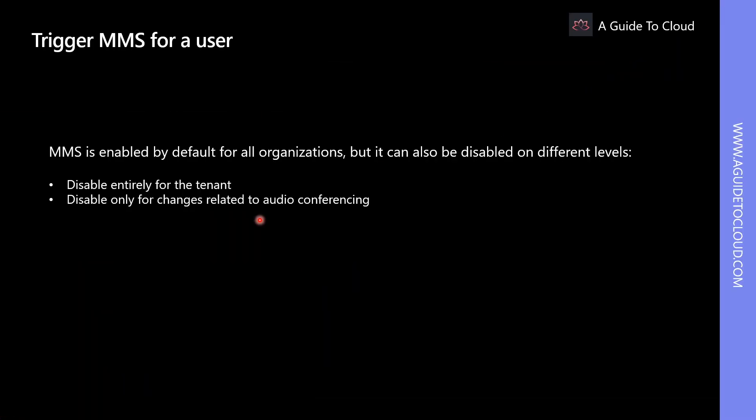When MMS is triggered for a user, there are a few things we need to understand. The user is migrated from on-premises to the cloud, an admin makes a change to the user's audio conferencing settings, or upgrading meetings occurs when assigning a Teams upgrade policy and the admin uses PowerShell commands.